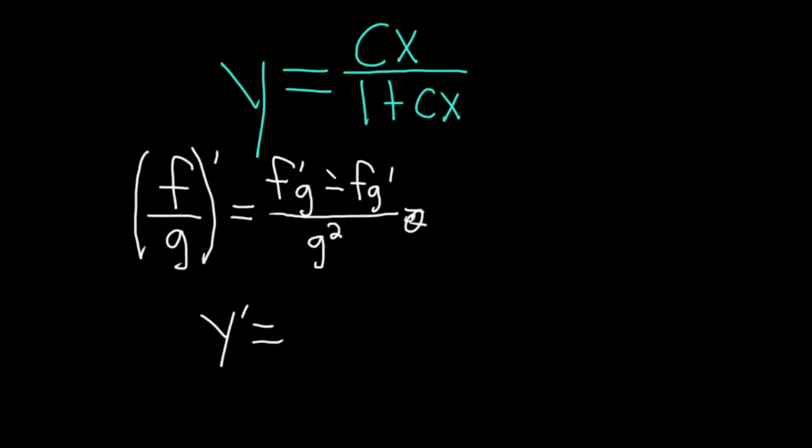So our top function is cx and c is a constant. So when we take the derivative of cx we just get c because the derivative of x is 1 and so the c kind of just hangs out. So it's just like c times 1 which is c. So the derivative of cx is c times the bottom. So 1 plus cx minus the top. So cx times the derivative of the bottom.